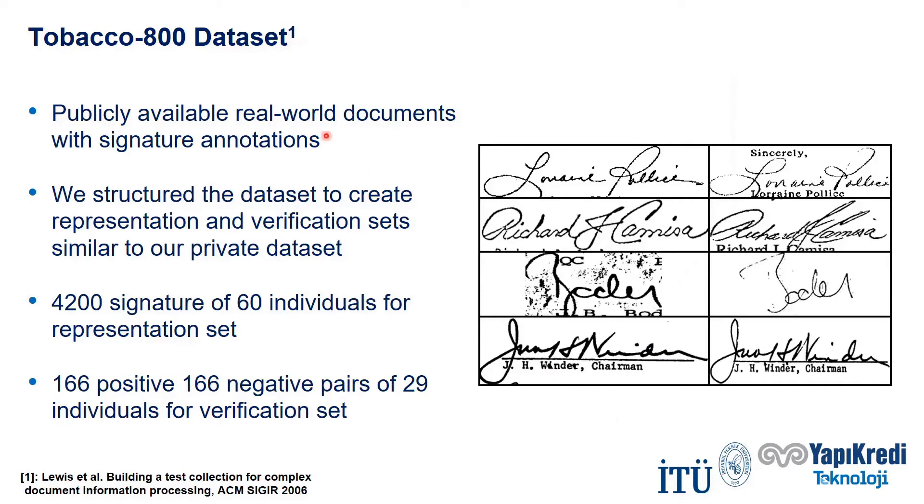We have also used a public Tobacco 800 dataset. There are no rubber stamps in this dataset, but it contains different occlusions as all real-world documents. This dataset is not targeted for signature verification, but we have structured the dataset to create similar sets as our private dataset, and we published our benchmark publicly.